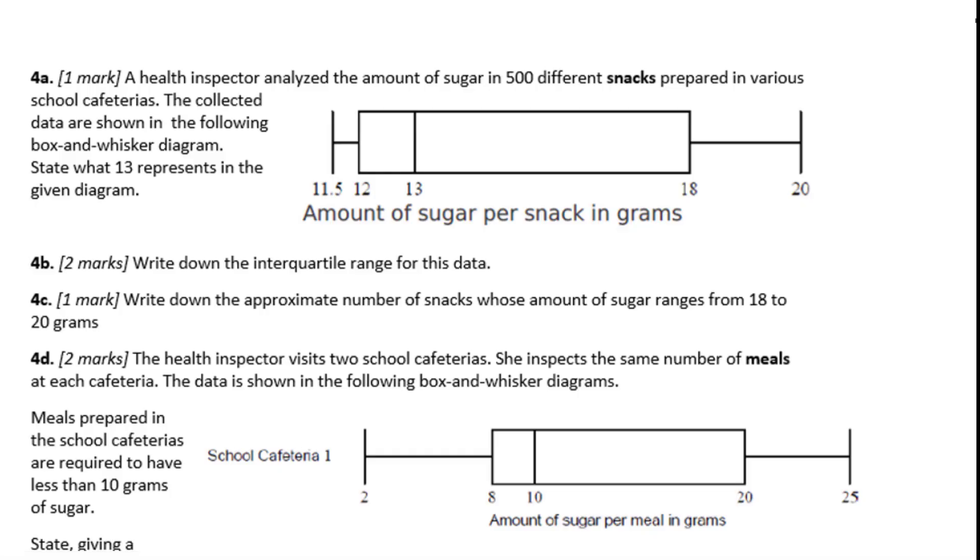Let's go to 4A. A health inspector analyzed the amount of sugar in 500 different snacks prepared in various school cafeterias. The collected data are shown in the following box and whisker diagram. State what 13 represents in the given diagram. 13 is the median.